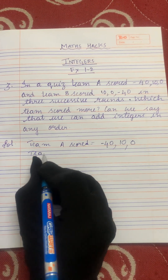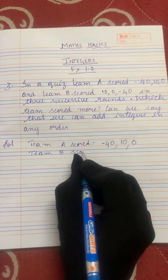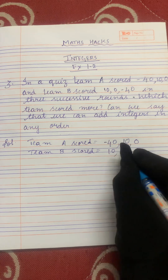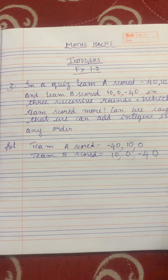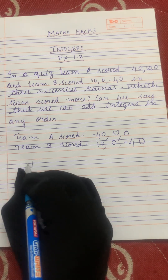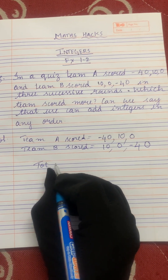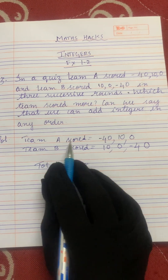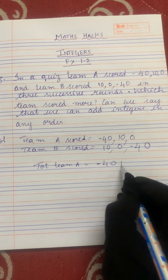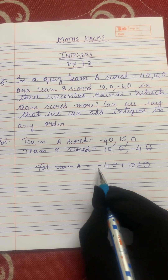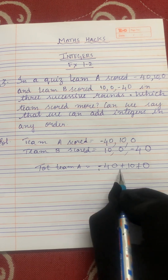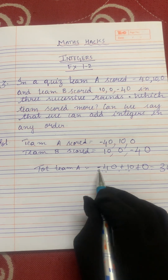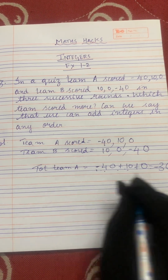Team B scored 10, 0, and minus 40. Now let's add all the integers. Total of team A: minus 40 plus 10 plus 0. Minus 40 plus 10: plus into minus is minus, 40 minus 10 gives you 30. The greater number is 40 and its sign is minus, so minus 30 is the total of team A.